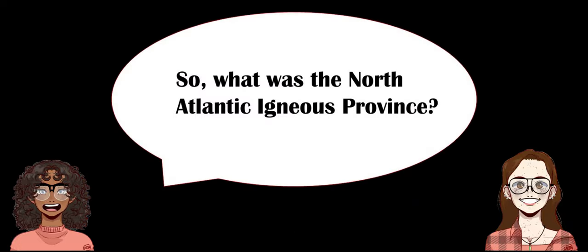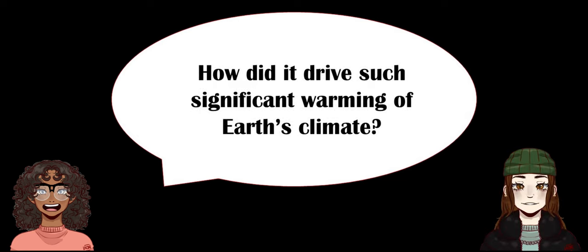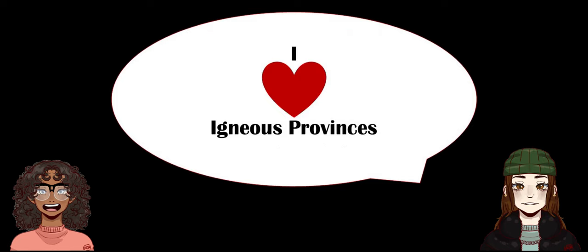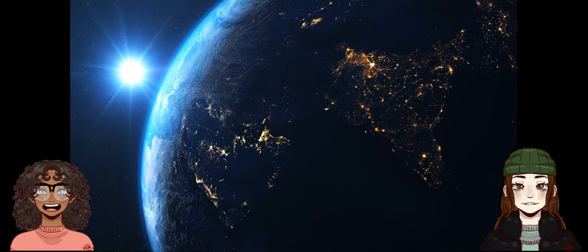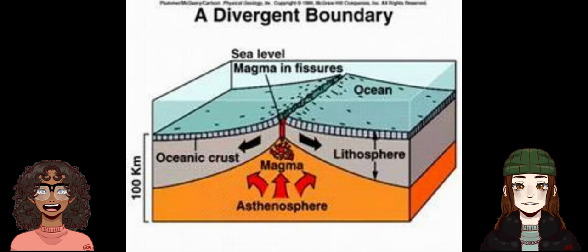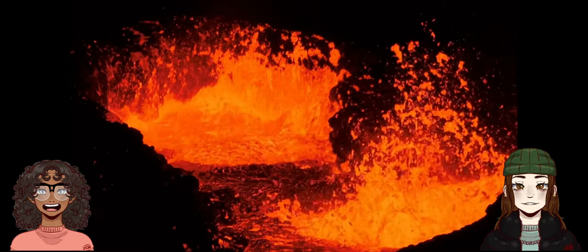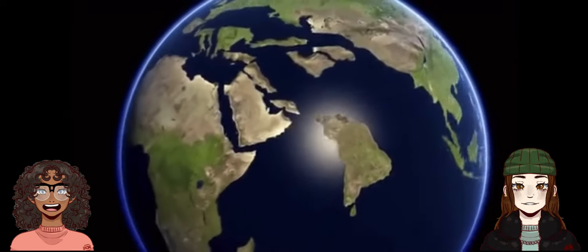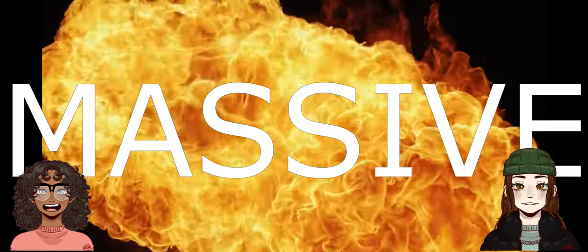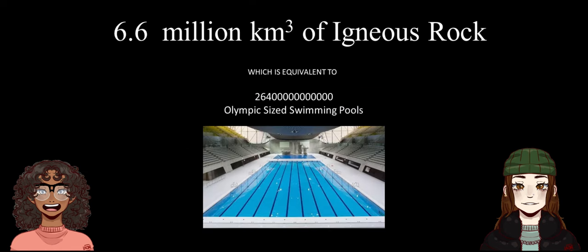So what was the North Atlantic large igneous province, and how did it drive such significant warming of Earth's climate? Let's talk about what a large igneous province is and the connection between Earth's climate and magmatic systems. These systems are often situated at divergent plate boundaries or areas where a mantle plume is rising beneath the surface. At these sites, massive accumulations of igneous rocks form in the crust and then erupt to the surface. As rifting of Pangaea initiated, the crust above the Iceland hotspot was stretched, leading to the formation of the North Atlantic Igneous Province. It was massive, standing over 1.3 million kilometers squared in area and generating a staggering 6.6 million kilometers cubed volume of igneous rocks.